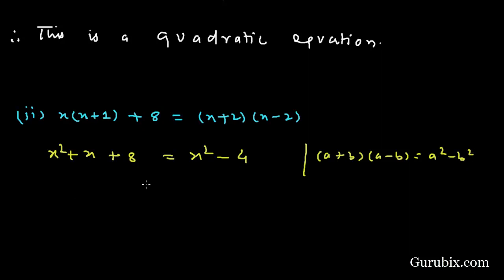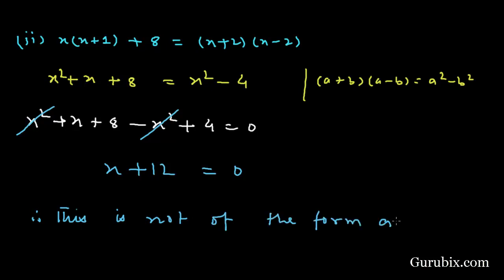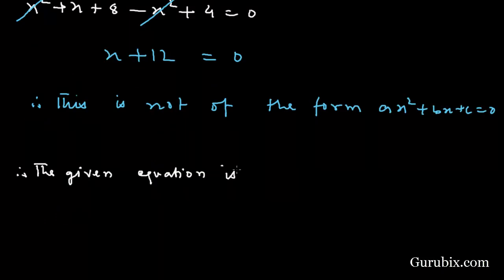Taking the right hand side values to the left hand side, we get x² + x + 8 - x² + 4 = 0. Cancelling positive x² with negative x², we have x + 12 = 0. This is not of the form ax² + bx + c = 0, therefore the given equation is not a quadratic equation.